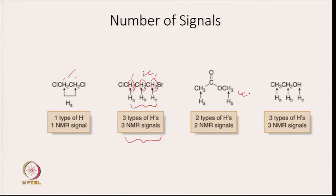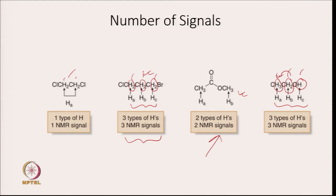In another compound with two different kinds of protons, there will be two NMR signals. In a compound with three different kinds, there are three NMR signals. These three protons have similar environment, so they are one kind. These two protons also share the same environment, so they are another kind. But the environments between these groups differ, so they are assigned to different groups.